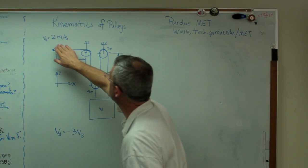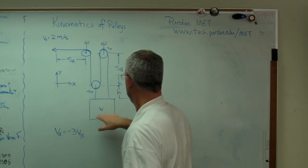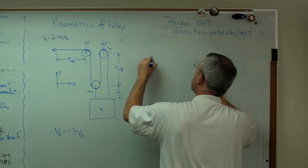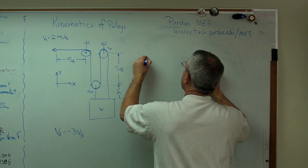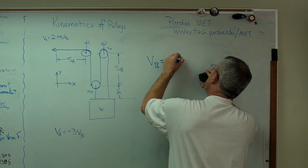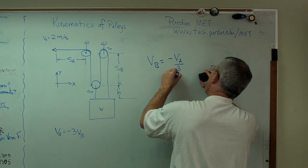So let's find VB. VB is minus VA over 3. VA is minus 2. Minus because I'm going in the opposite direction of my assumed positive direction.